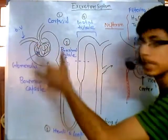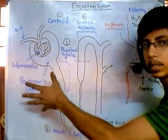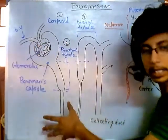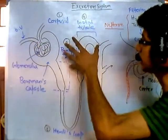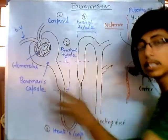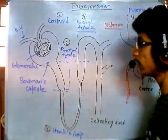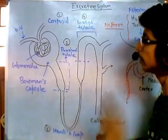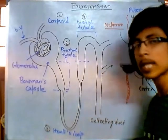From corpuscle, then proximal tubule, then Henle's loop, then distal tubule, then collecting duct. So these are the five important things that we need to talk about.